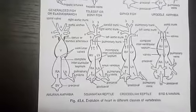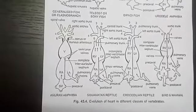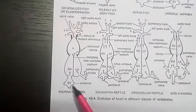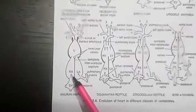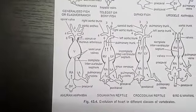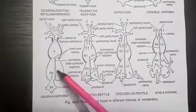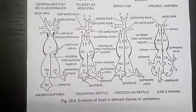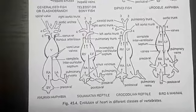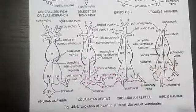In amphibians, the dorsal atrium shifts anterior to ventricle. The sinus venosus opens into right atrium dorsally and not posteriorly. The atrium is completely divided by the septum into right and left chambers and has no foramen ovale.